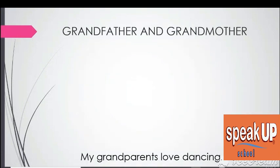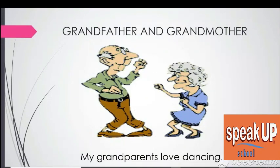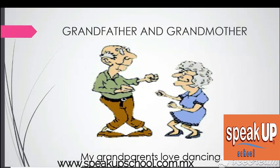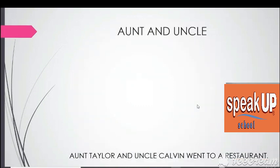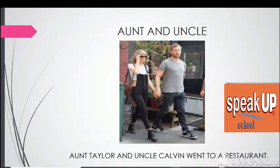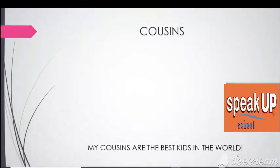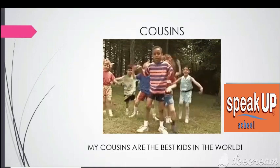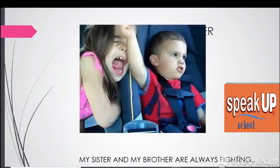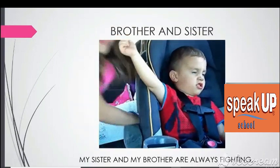Let's see some examples. Grandfather and grandmother — 'My grandparents love dancing.' Instead of saying grandfather and grandmother, you can say grandparents together because they're a couple. If you're referring only to your grandfather, then you say grandfather, and if only to your grandmother, then grandmother. Aunt and uncle — 'Aunt Taylor and Uncle Calvin went to a restaurant.' Cousins — 'My cousins are the best kids in the world.' Do you get along with your cousins? Brother and sister — 'My sister and my brother are always fighting.'